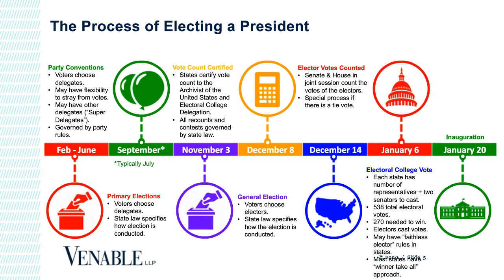If they don't quite meet the safe harbor, they do at least have to get their results in by December 14th, which is when the Electoral College meets and casts their vote. So the drop-dead date for getting all votes counted accurately and certified is December 14th. Then the Electoral College vote is counted in Washington on January 6th. On January 20th, as long as everything goes according to plan, we will have the inauguration of the president.